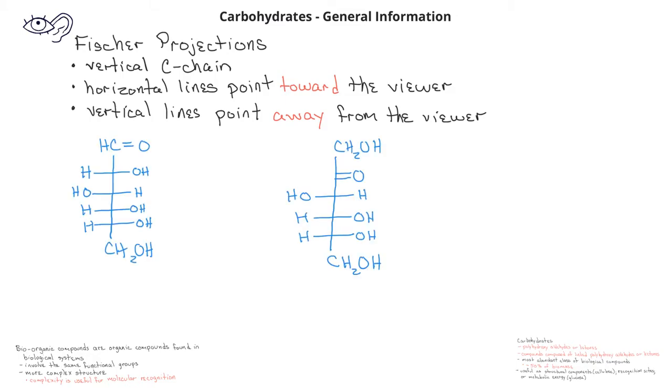These are two examples of Fischer projections for some very common carbohydrates. This first one is D-glucose, also known as dextrose, and is the most abundant carbohydrate in nature. The second carbohydrate is D-fructose, and you'll recognize that even though glucose and fructose have the same molecular formula, C6H12O6, they have slightly different structures. Glucose has an aldehyde functional group, whereas fructose has a ketone functional group.